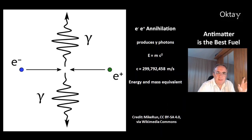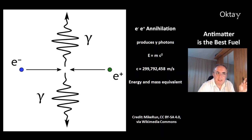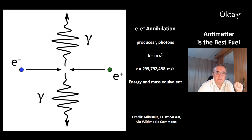This equation says that energy and mass are equivalent, and if you manage to convert a little bit of mass into energy, because of the c² number, you get a lot of energy from very little mass.